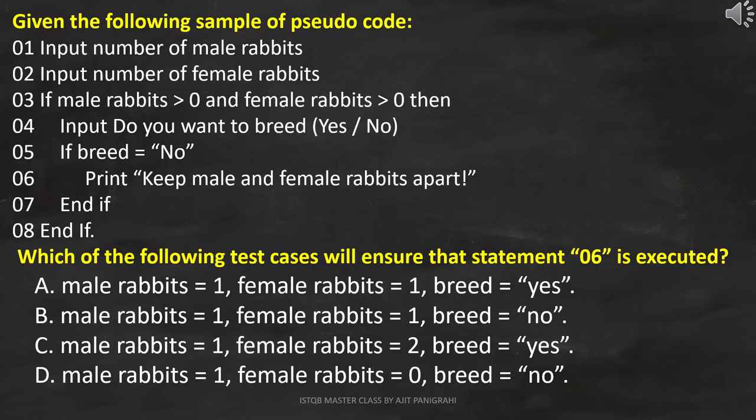Here, the question is, given the following sample of pseudocode, which of the following test cases will ensure that statement 06 is executed? And then these options are provided.